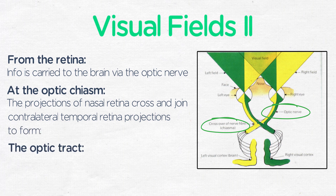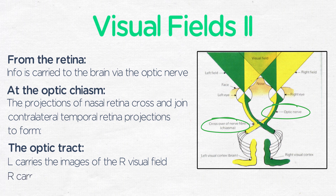The optic tract on the left carries the images of the right visual field, and the optic tract on the right carries the images of the left visual field.